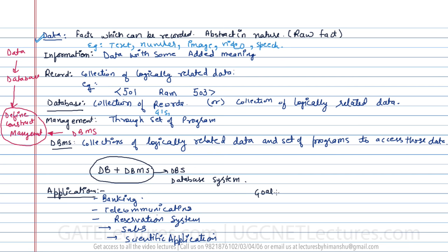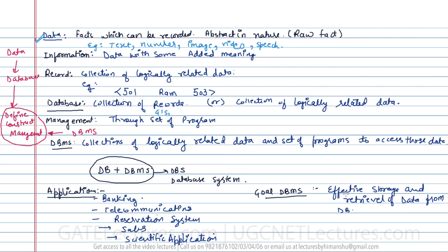When I say what is the goal of a DBMS — the goal of a database management system is the effective storage and retrieval of data from the database.